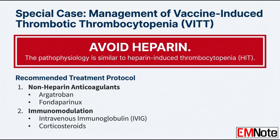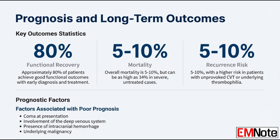The prognosis is actually surprisingly good. Provided there's early diagnosis and intervention, approximately 80% of patients achieve good functional outcomes. Overall mortality is low, around 5 to 10%. However, mortality can climb to 34% in severe, untreated cases. The recurrence risk is modest, about 5 to 10%, which reinforces the need for long-term anticoagulation strategy.